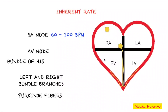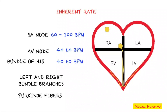However, if the SA node fails or there is a block, the AV node will kick in and generate its own impulse. When this happens, the AV node generates a heart rate of 40 to 60 beats per minute.